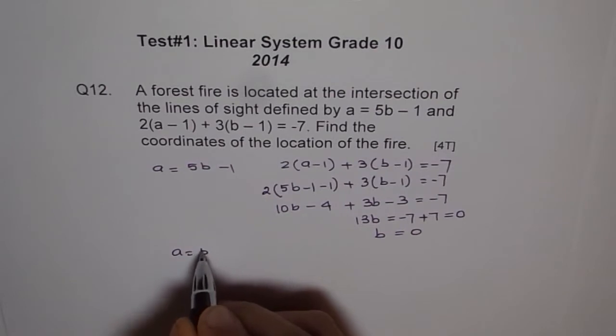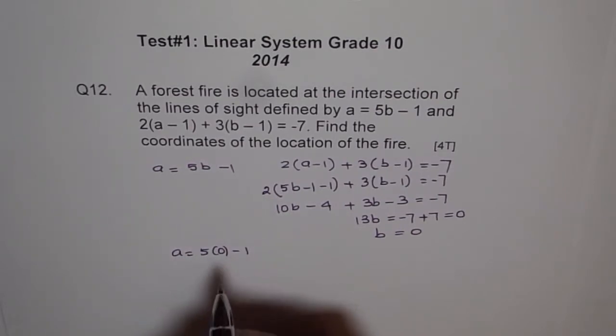I get A equals 5 times 0 minus 1 which is equal to minus 1.